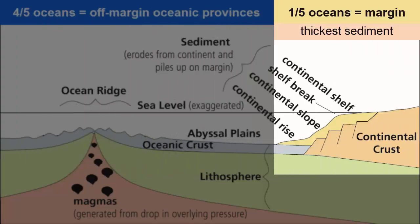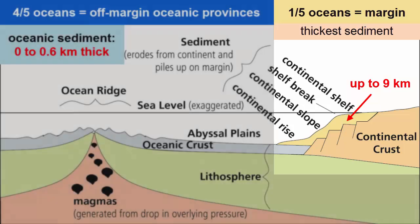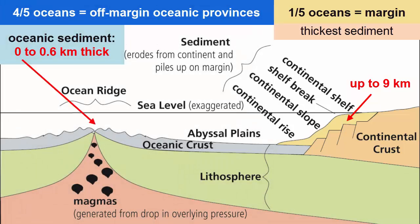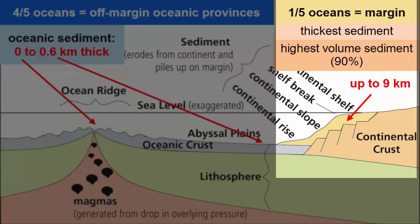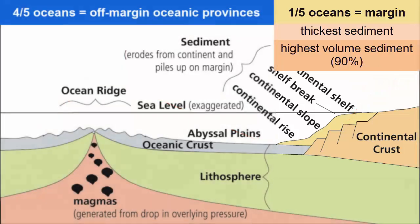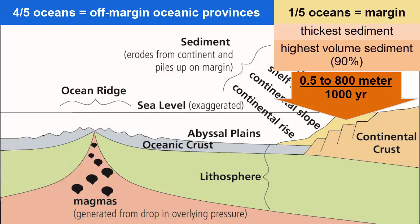However, the sediment that collects in the margin environment is the thickest in the world, up to nine kilometers thick, compared with oceanic sediment thickness, which increases from zero at the ridges to 0.6 kilometers at the thickest, oldest edges of the abyssal plains. Even though the margin environment represents only one-fifth of the ocean's surface, its sediment volume represents almost 90% of the total ocean sediment. Sediment collects here much faster, at rates from a half to 800 meters per 1,000 years. In the oceanic zone, sediment collects at its fastest at one centimeter per thousand years.